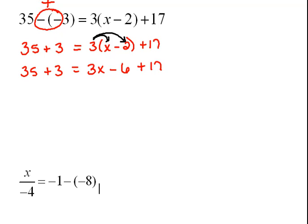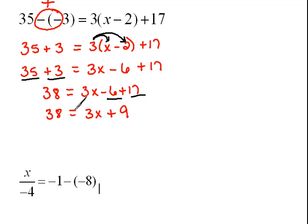Now we can start combining like terms. We have a 35 and a positive 3 on the left hand side. Those are like terms. They can be combined to 38 equals 3x minus 6 plus 17. Now on the right hand side we have negative 6 and a positive 17 which can be combined also. So now we have 38 equals 3x plus 9.